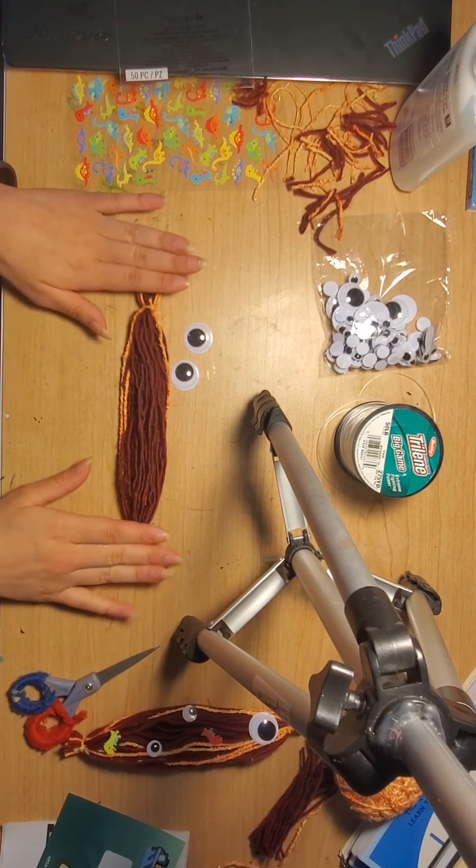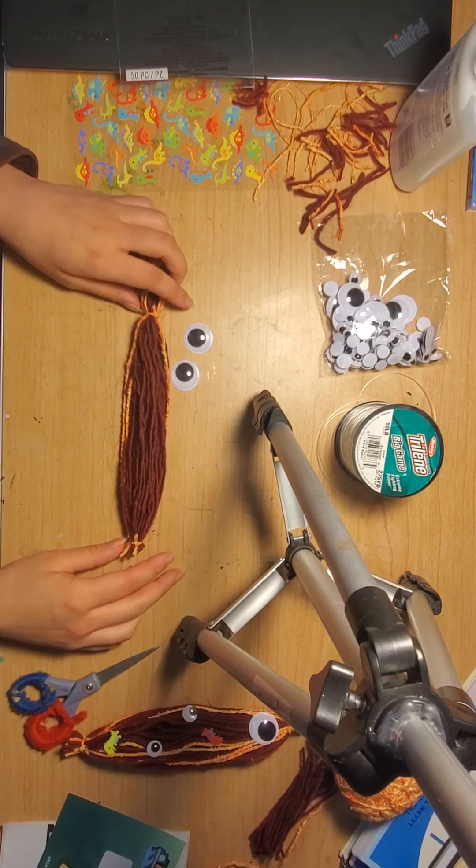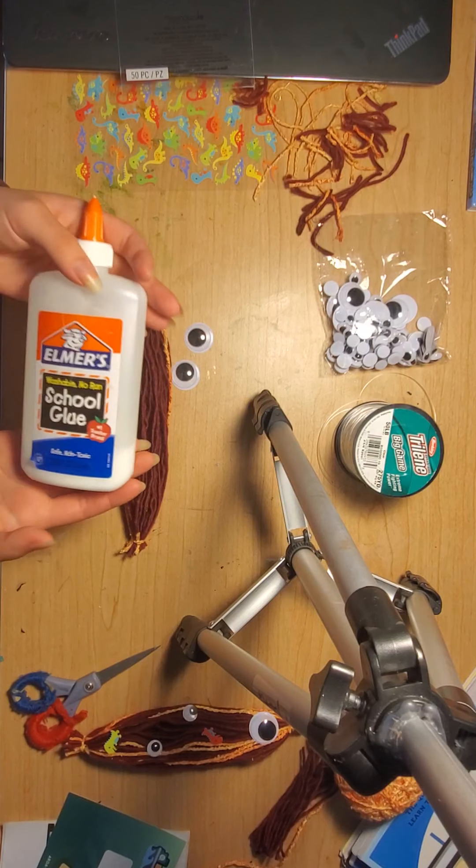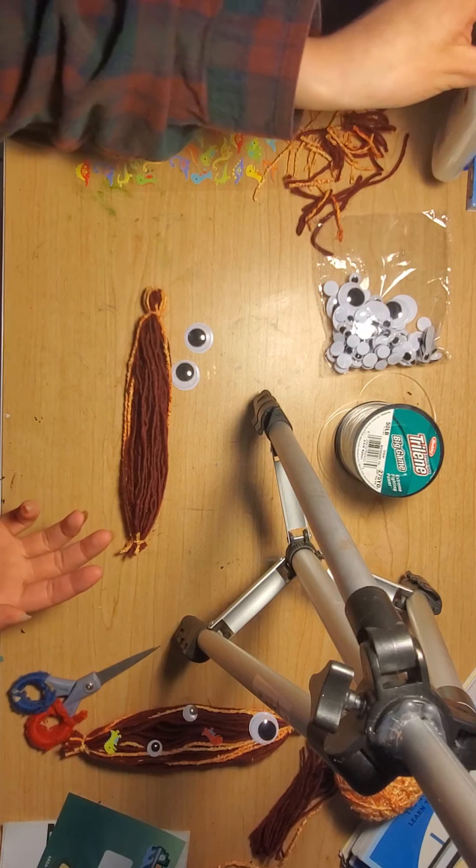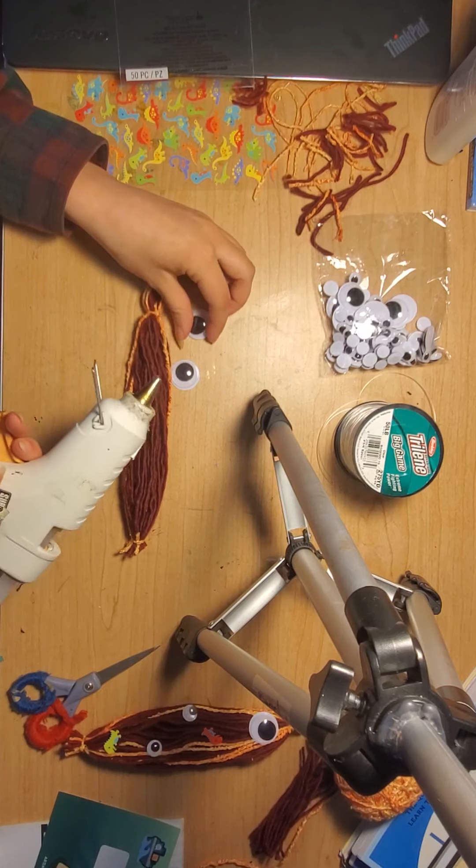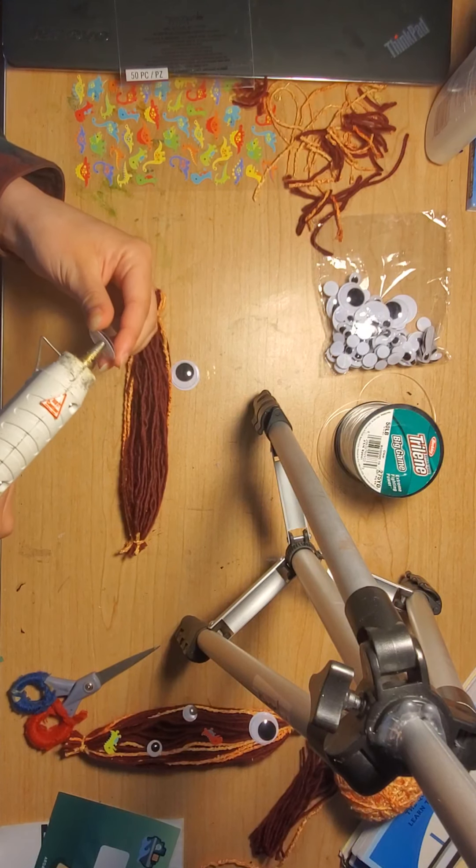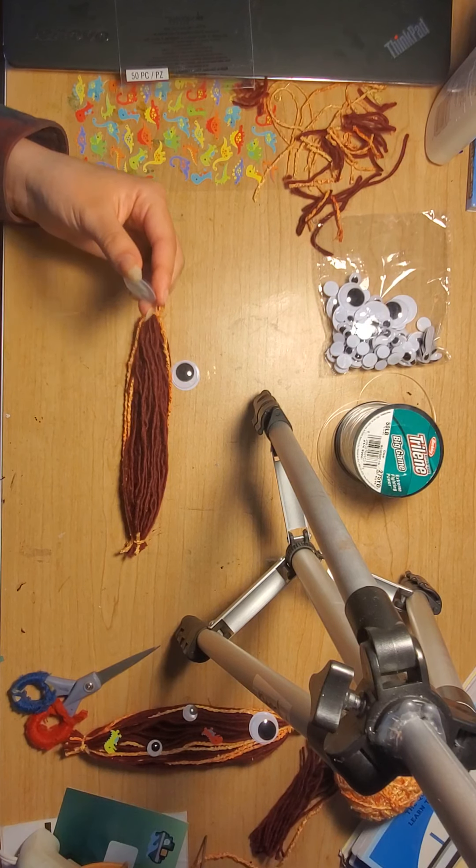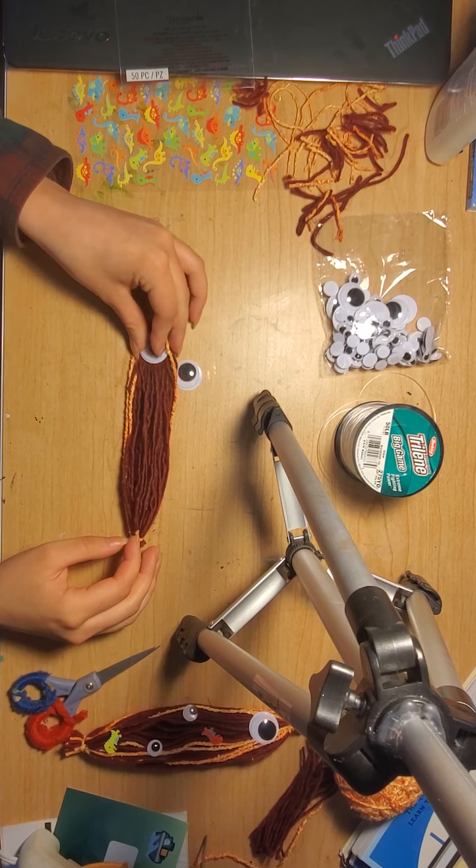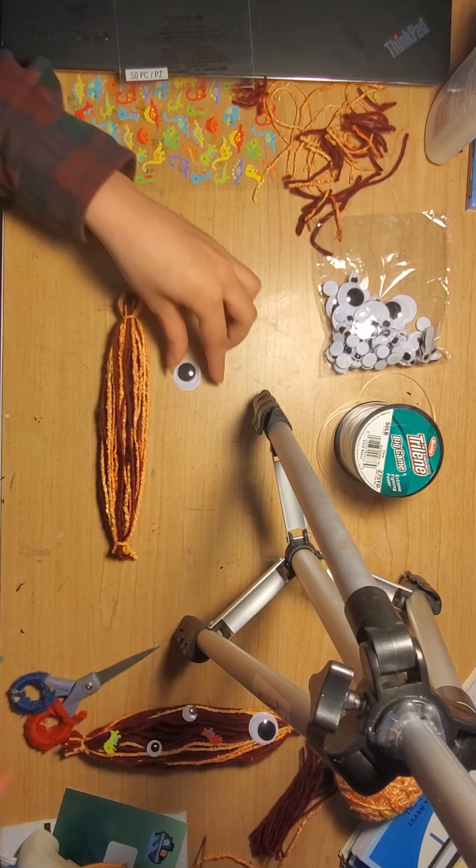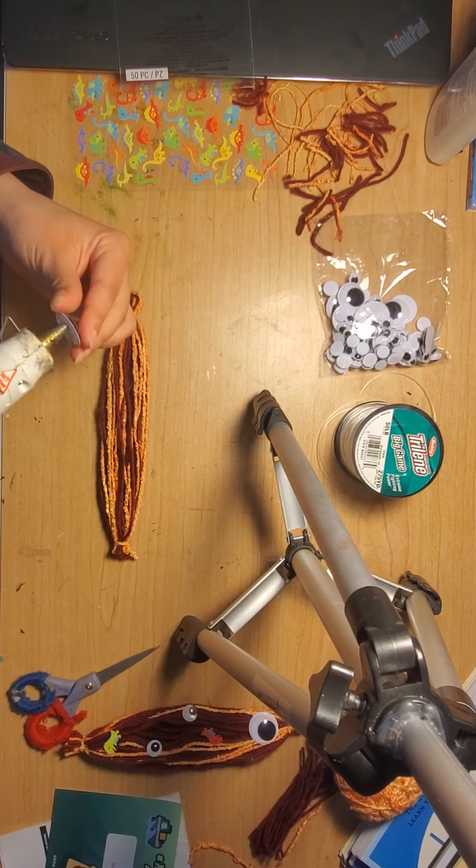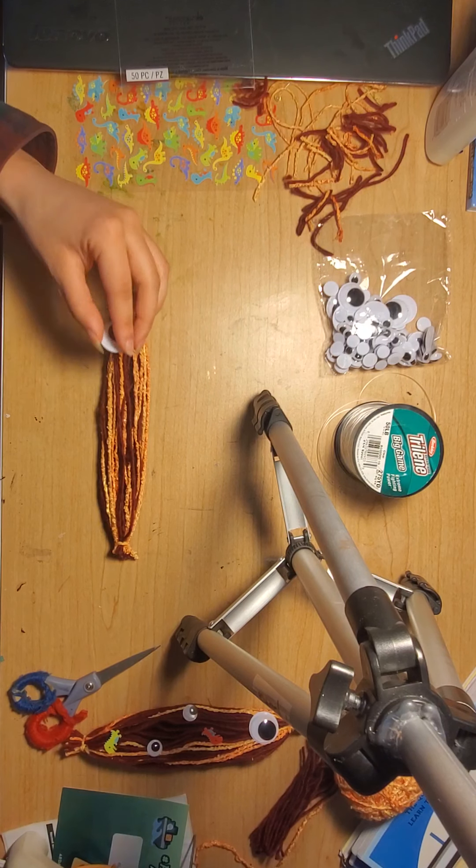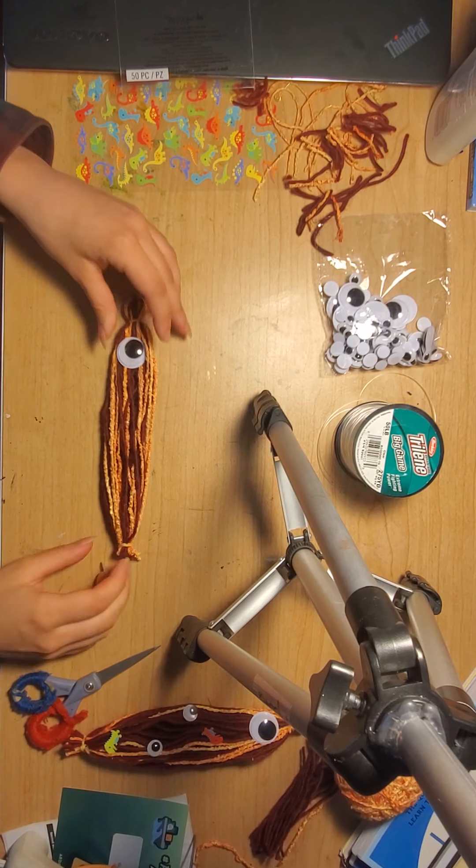And then you can glue them to your worm fish body thing. And you can use Elmer's glue. Teacher can use hot glue. But if it's just you, then please use the Elmer's glue. Hot glue is not safe. It's very hot, very dangerous, and you can burn yourself. And that would be very bad. So if you are going to use hot glue, please have a parent or grown up help you.